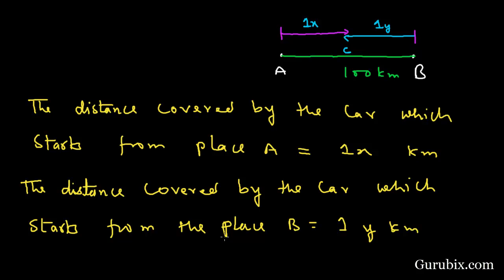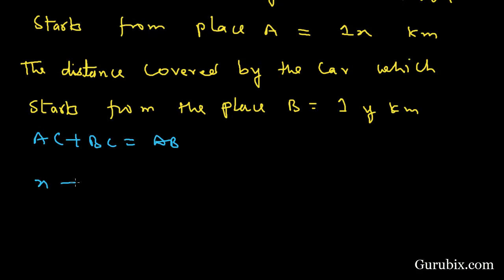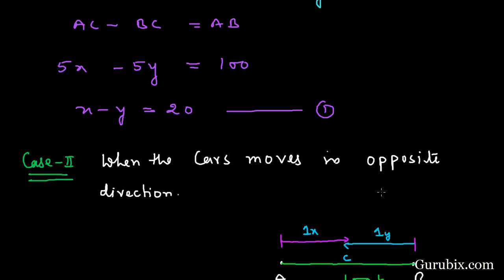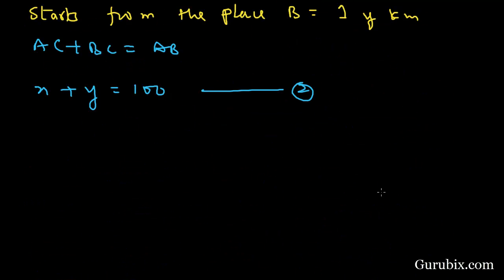From this diagram, AC plus BC equals AB. This means x plus y equals 100. This is our equation number two. We can apply any of the three algebraic methods — elimination, substitution, or cross multiplication. Since the coefficients of both x and y are the same in both equations, it is easy to apply the elimination method.